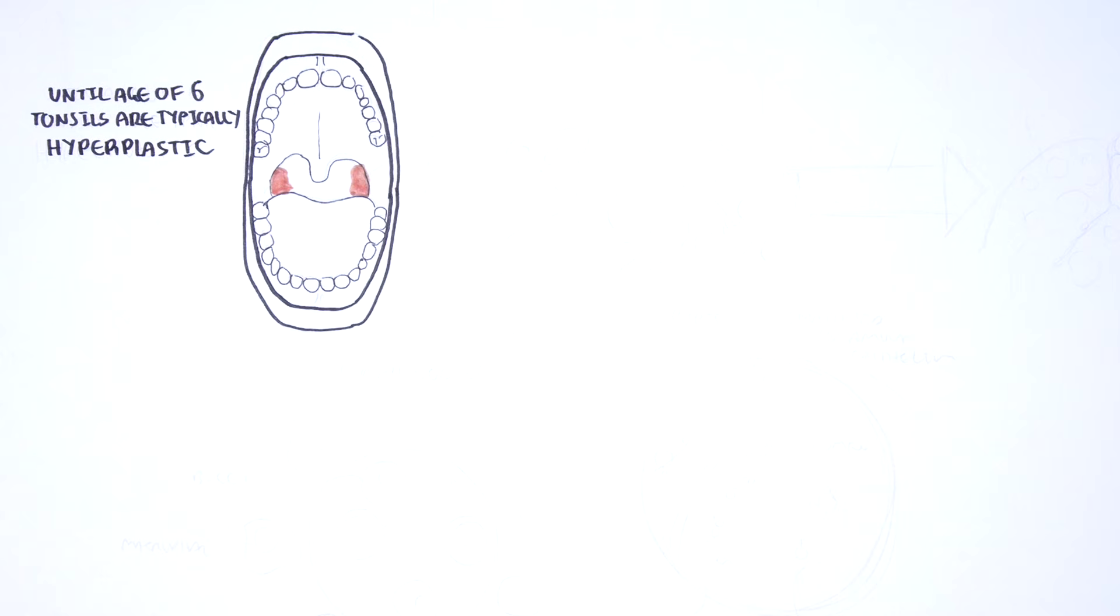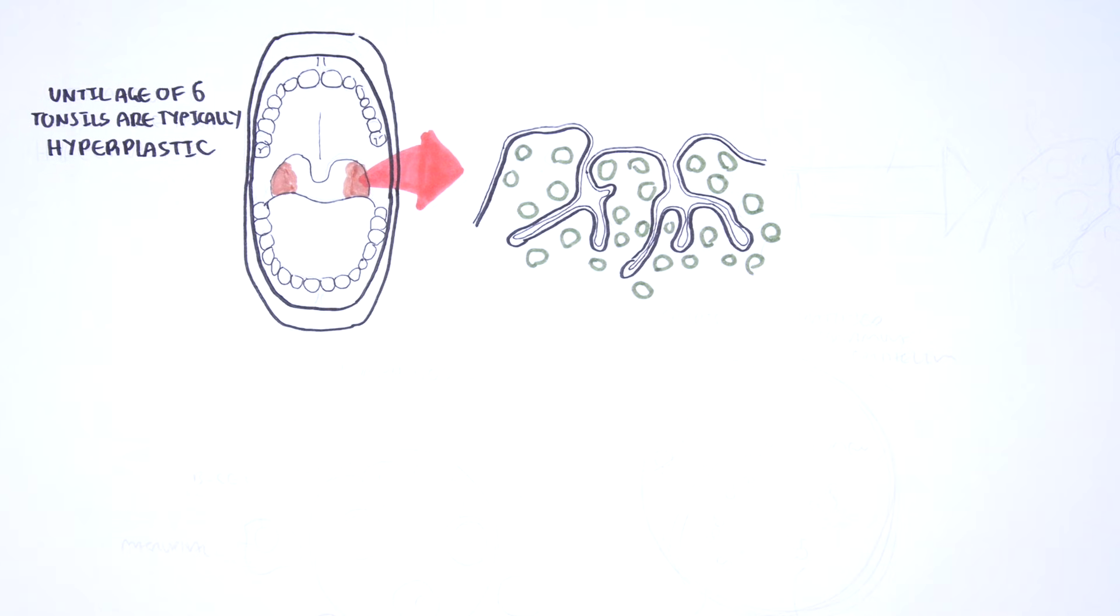The palatine tonsils have a strong blood supply from five different vessels. That is why there is a risk of a lot of bleeding with tonsillectomy, removal of the tonsils.